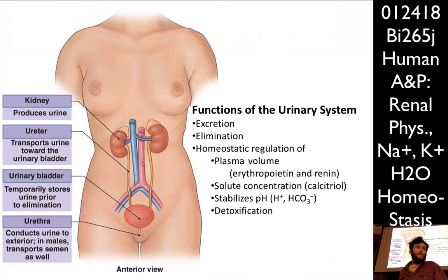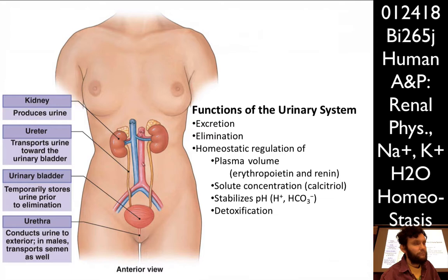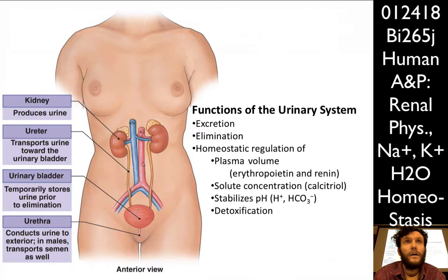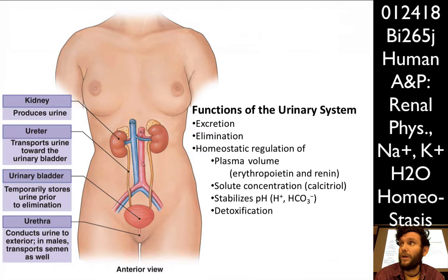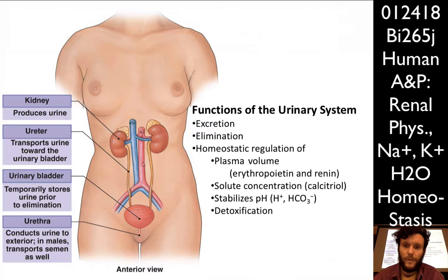There is solute concentration — specifically calcium — under the control of calcitriol. It helps to stabilize pH in the blood via its control of hydrogen ion concentration and carbonate, and the osmolarity of the blood via control of other ions such as sodium. If you have too much sodium in the body, you can go through a process of natriuresis, which is the removal of sodium from the body via the urine. Finally, there is some detoxification of the blood by elimination of water-soluble toxins that have specific transporters enabling their elimination.